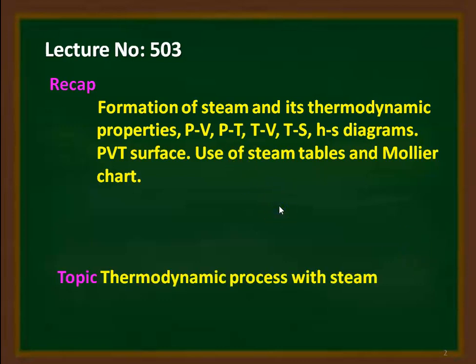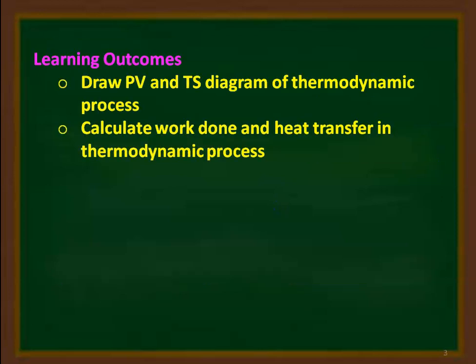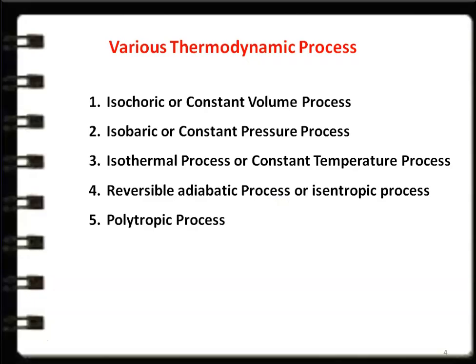In this lecture, we will discuss thermodynamic processes with steam. The learning outcomes for students: at the end of the lecture, the student will be able to draw the PV and TS diagram of thermodynamic processes, and calculate the work done and heat transfer in thermodynamic processes. The processes we will discuss are: isochoric or constant volume process, isobaric or constant pressure process, isothermal or constant temperature process, reversible adiabatic or isentropic process, and the polytropic process.